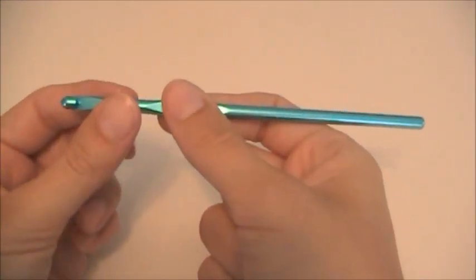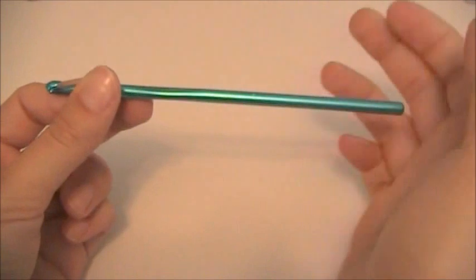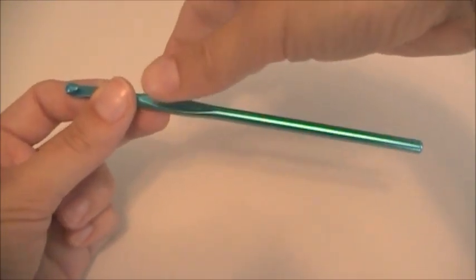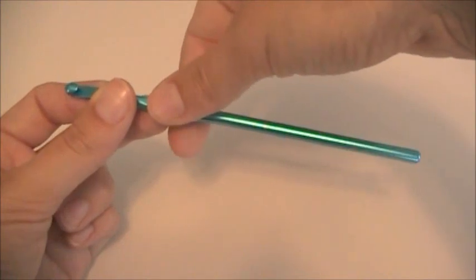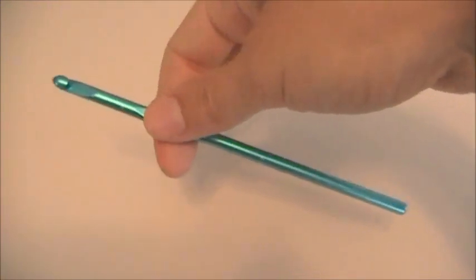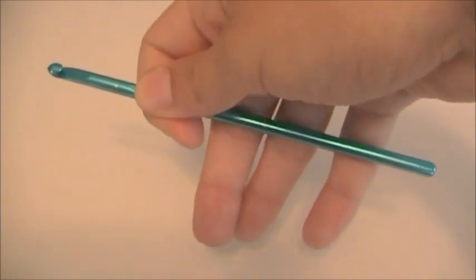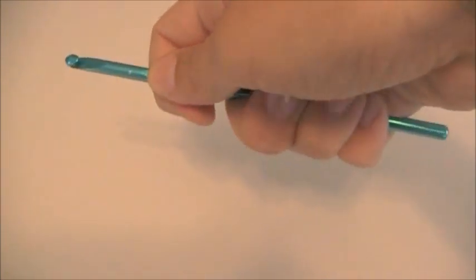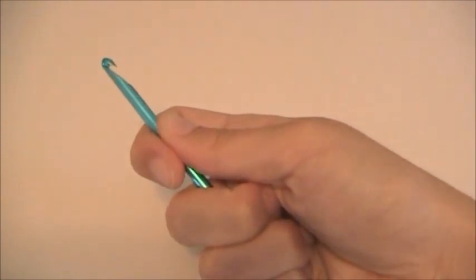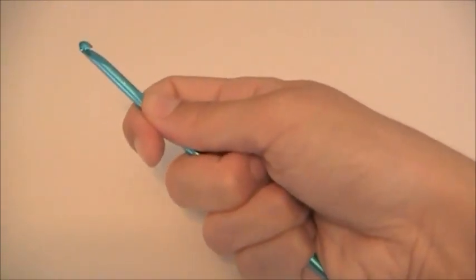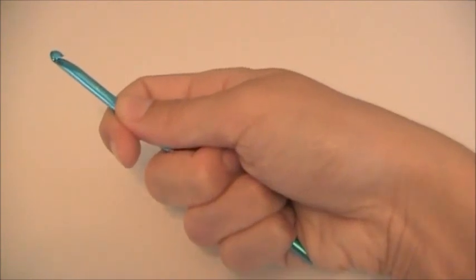The second grip is the knife hold. You actually come at the crochet hook from over top. We are still taking our thumb and forefinger, gripping the thumb hold, but now we take the rest of our fingers and wrap around the crochet hook into your palm. So all of your fingers are basically wrapped around the crochet hook.